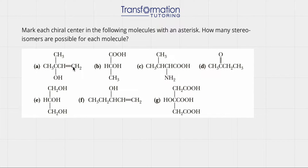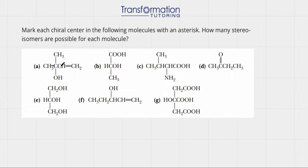In molecule A, is there a carbon that has four different groups? If we look at the carbon in the middle, it is connected to OH, CH3, another CH3, and CH. These two groups are identical, so this cannot be our chiral carbon. Other carbons have three hydrogens, two hydrogens, or are part of a double bond — in a double bond you are attached to only three different things. So molecule A does not have any chiral centers.